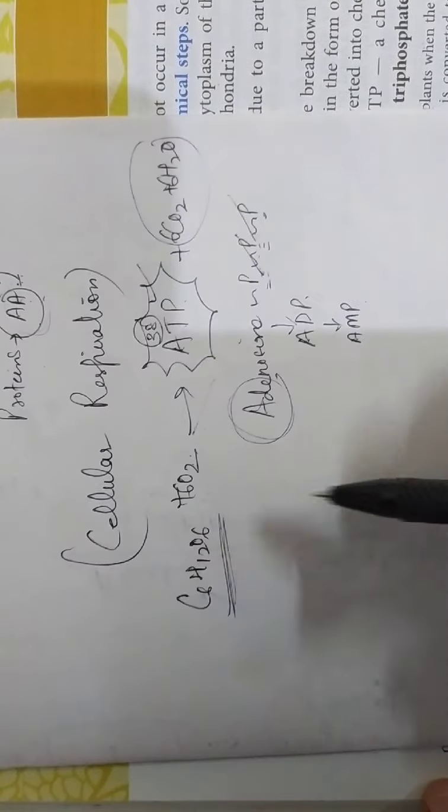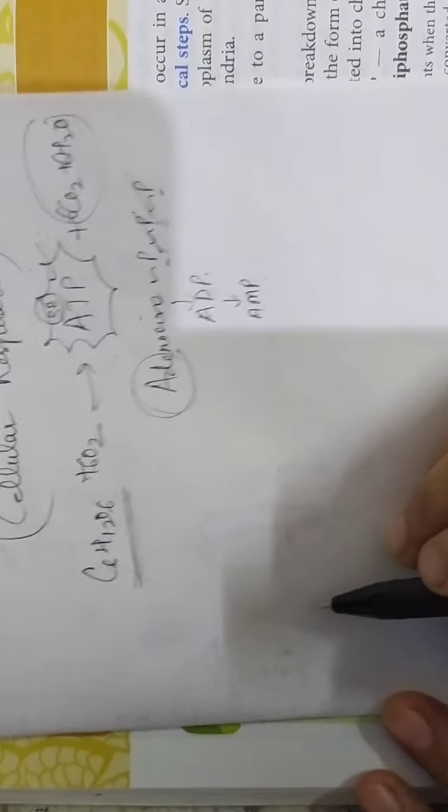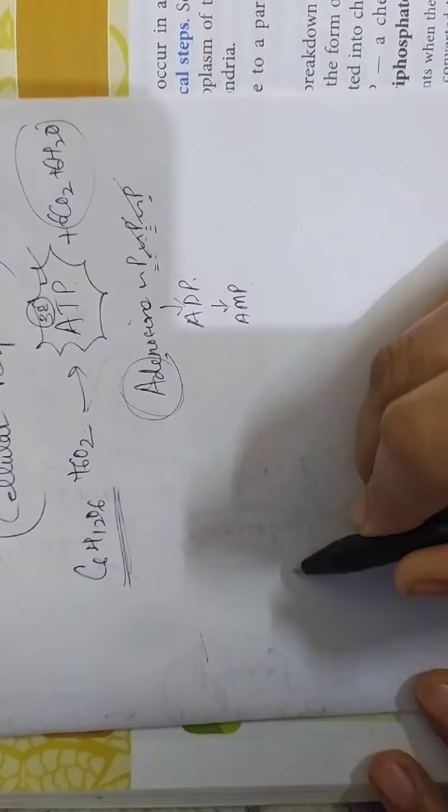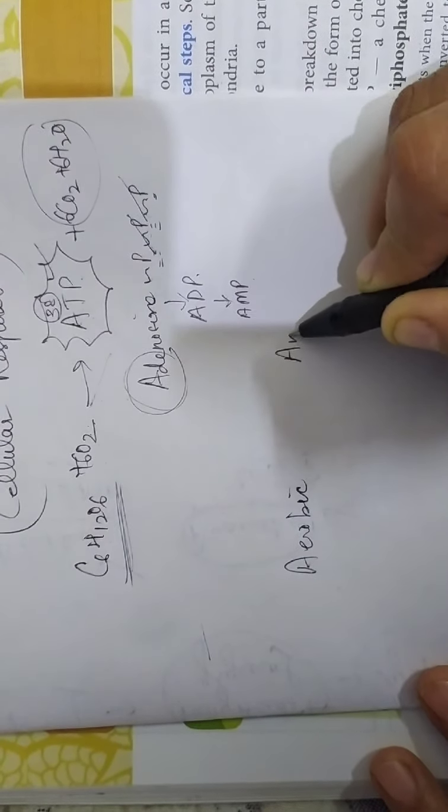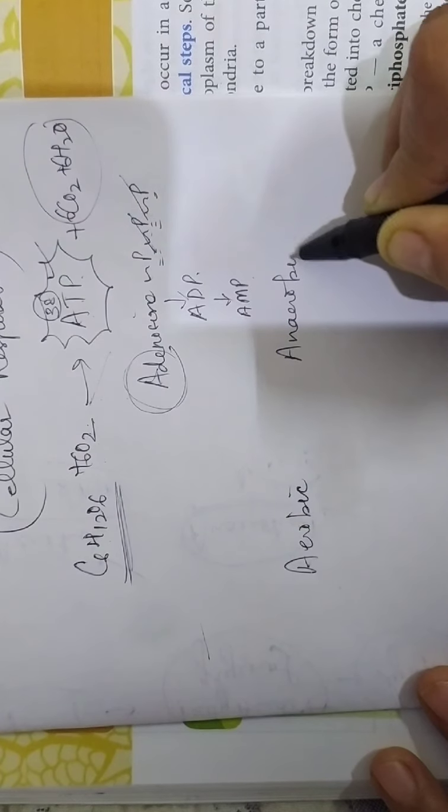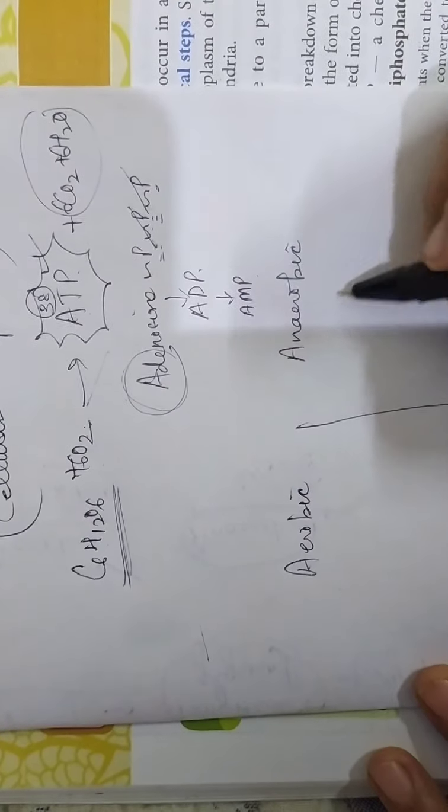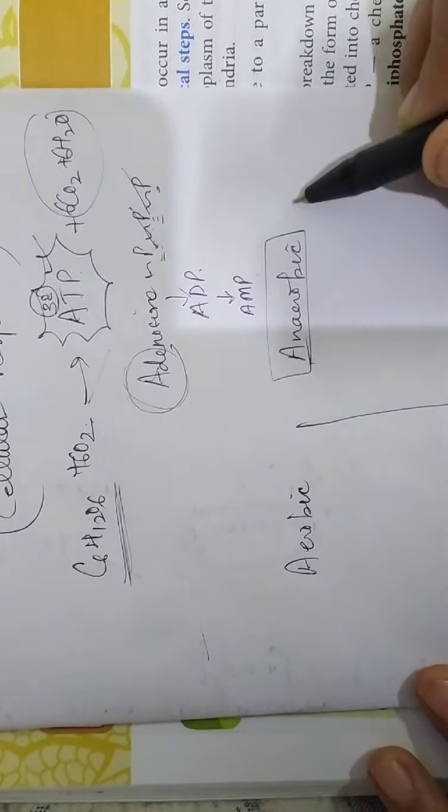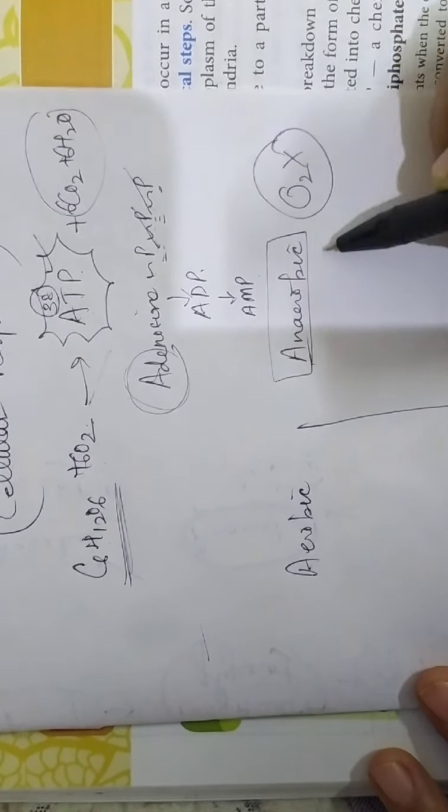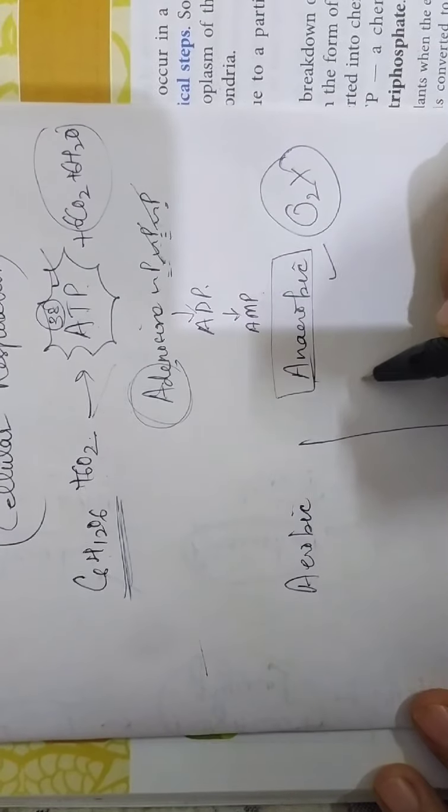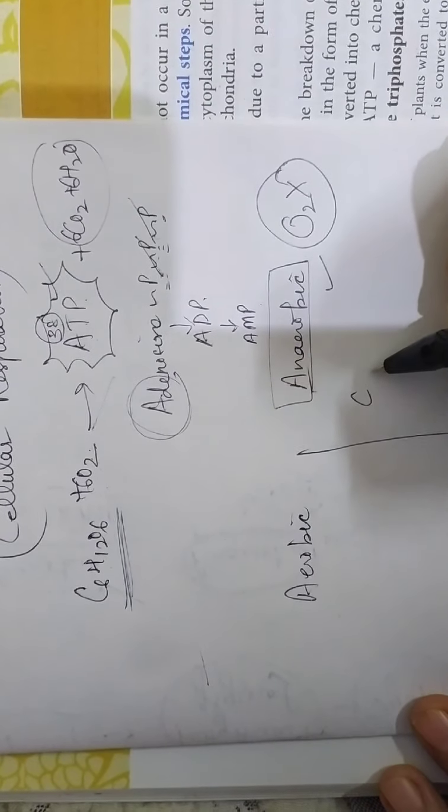Now after this we will talk about the two types of respiration. You all know that we have aerobic and anaerobic respiration. Anaerobic respiration takes place without oxygen.